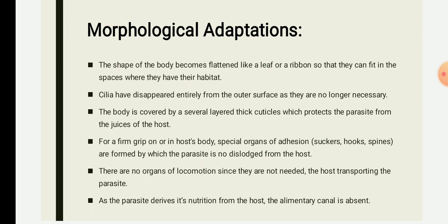In some amphistomes and gasterostomes found in hosts like cats, dogs, and horses, they remain attached to the stomach wall. The stomach is provided with hydrochloric acid and proteolytic enzymes for digestion of proteins. In order to protect from these, the parasites are provided with a thick resistant integument which is impregnated with a chitin-like substance of impermeable nature. This is an example of a new attainment or newly gained character.